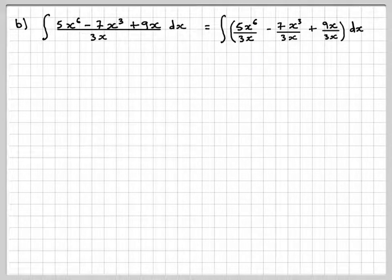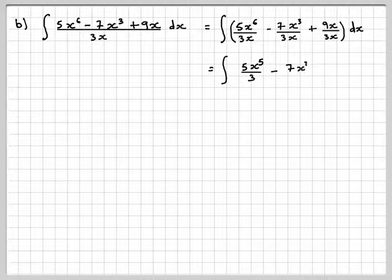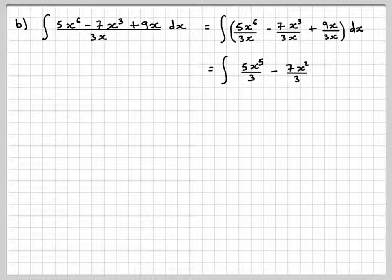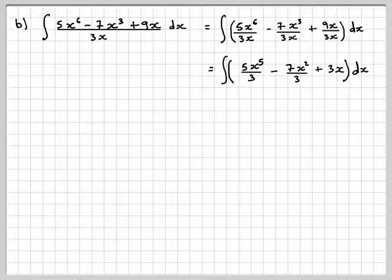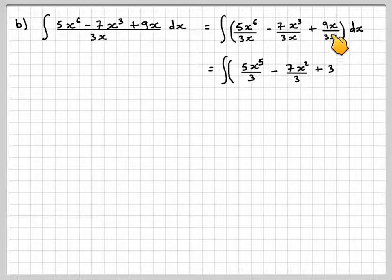5x⁶ divided by 3x becomes 5x⁵/3. This becomes 7x²/3. And this just becomes 9x divided by 3x. 9x divided by 3x is 3 dx.